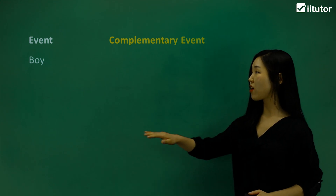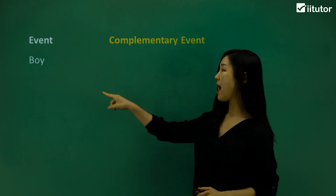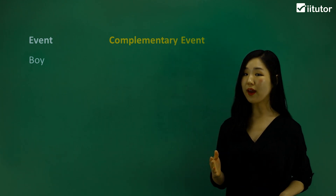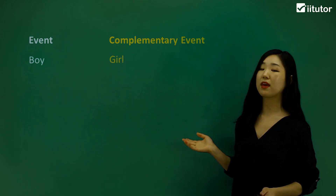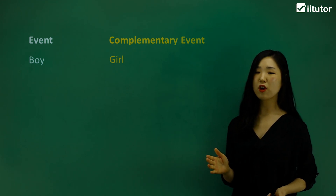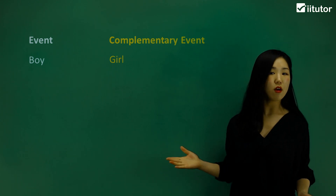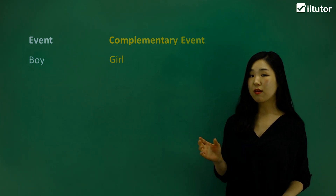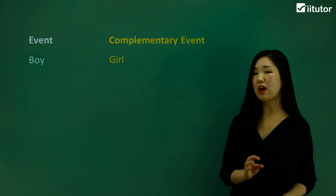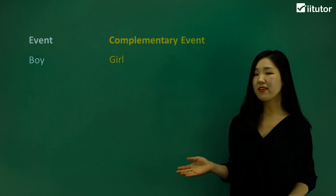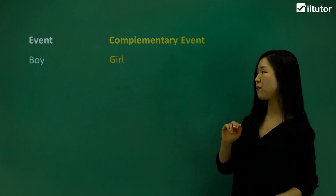Let's start off with boy. I've got my event column here and my complementary event here. Starting with the event of being a boy, the complementary event of a boy must be being a girl. So if it's not a boy, it must be a girl — it cannot be anything else. Another way you can write it is 'not boy'. You can use the word 'not' and that will be the complement.